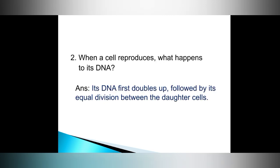Question number two: when a cell reproduces, what happens to its DNA? Answer: its DNA first doubles up, followed by its equal division between the daughter cells.